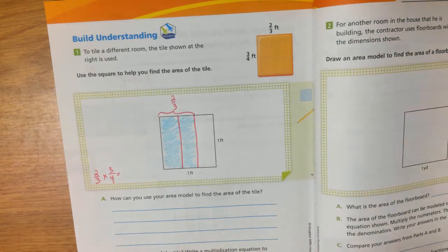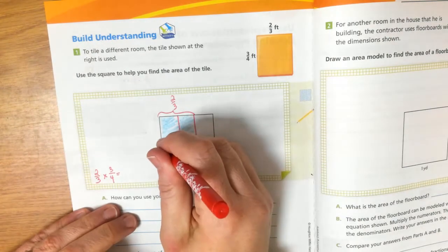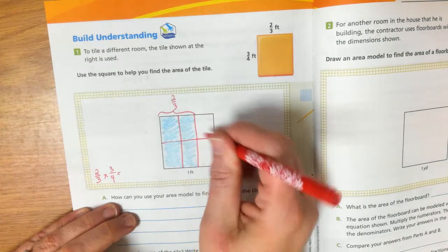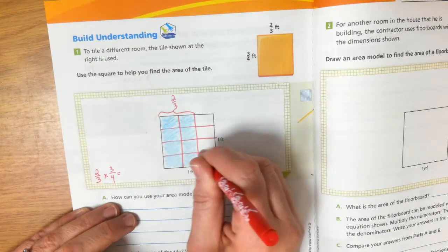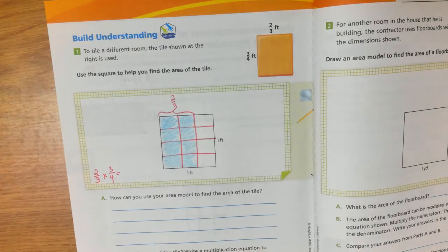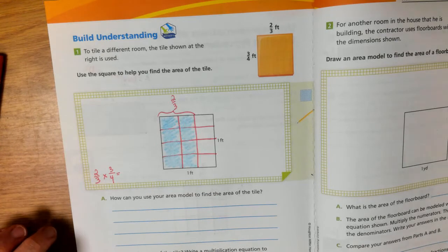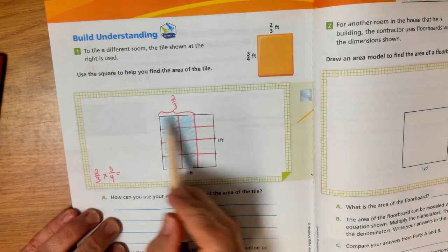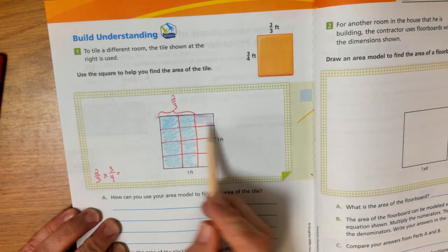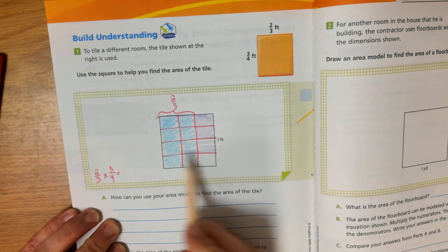And now, along the side, our area model, length times width. So we're going to multiply three fourths. So I need four equal pieces. So I'm going to first split it in half. And then I'm going to split the halves in half. So now I have four pieces. And I need to shade in three of them. One, two, three.